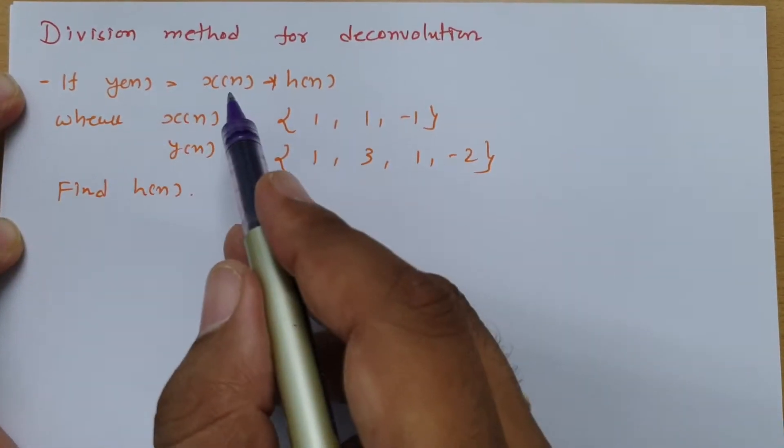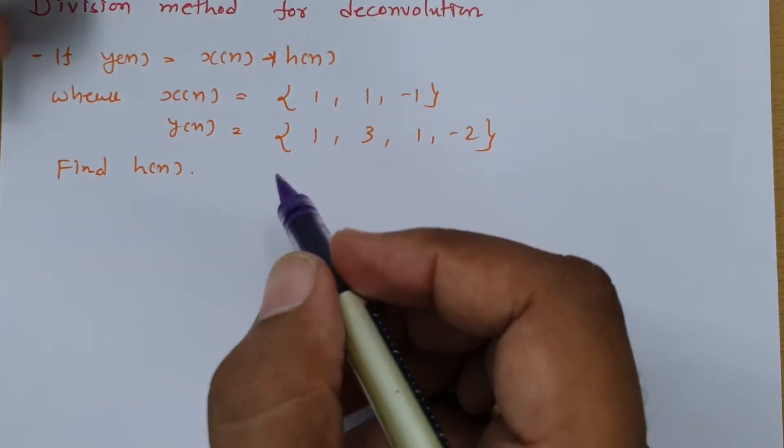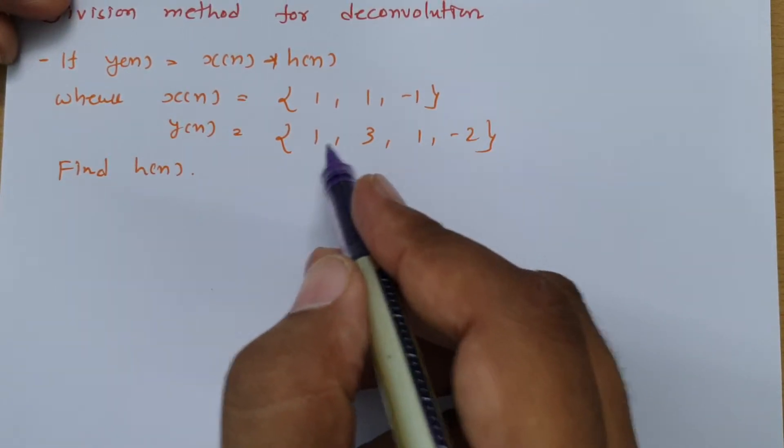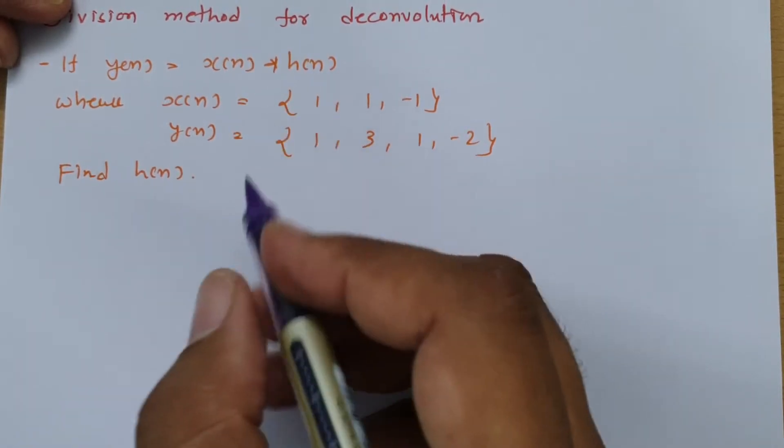Here, y(n) = x(n) convolution with h(n), where x(n) is given by {1, 1, -1} and y(n) is given by {1, 3, 1, -2}. The question is: find h(n).